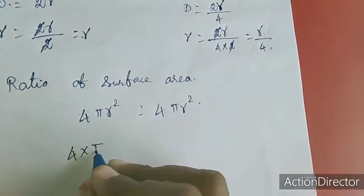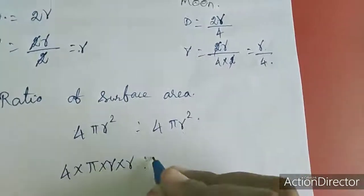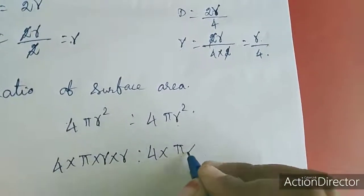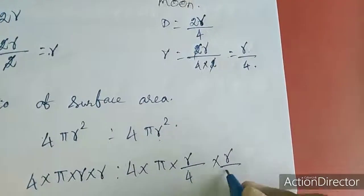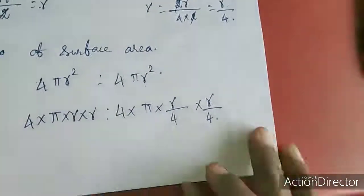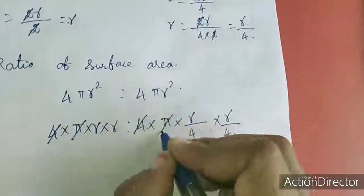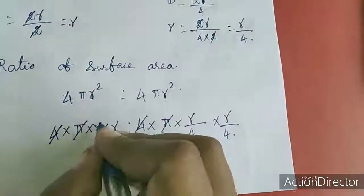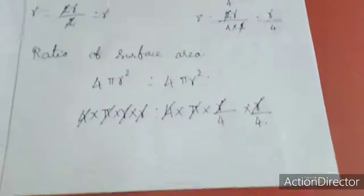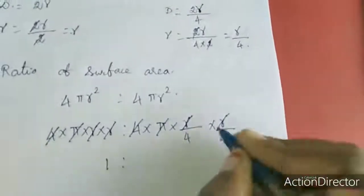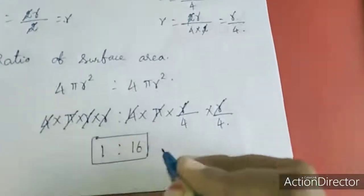Surface area of earth = 4πr². Surface area of moon = 4π(r/4)² = 4π × r²/16. Cancelling 4 and π and r², the ratio is 1/16. So the ratio of their surface areas is 1:16.